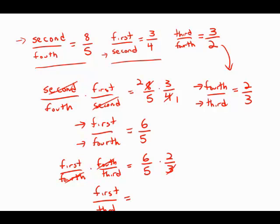And again, I'm going to cancel before I multiply. 2 times 2 is 4 over 5. The ratio of first graders to third graders is 4 to 5, and this is answer choice E.